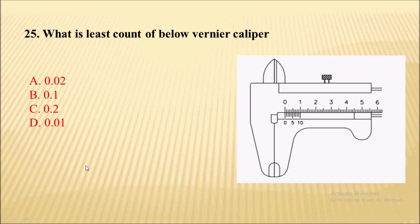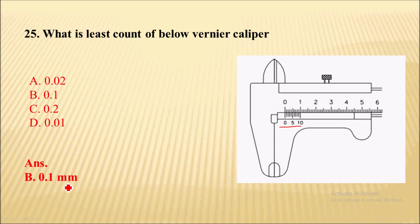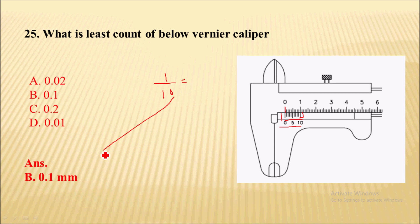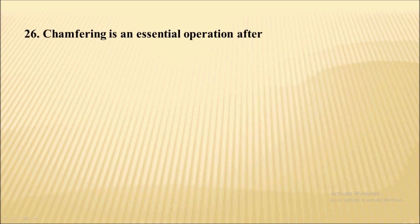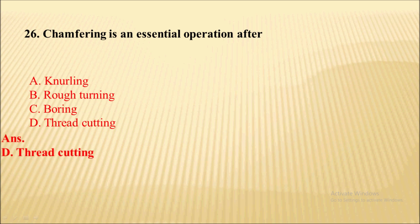What is the least count of the shown vernier caliper? The least count is 0.1 mm. It is calculated as the value of one main scale division — which is 1 mm — divided by the total number of divisions on the vernier scale, giving 0.1 mm.